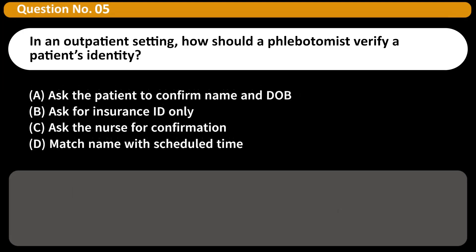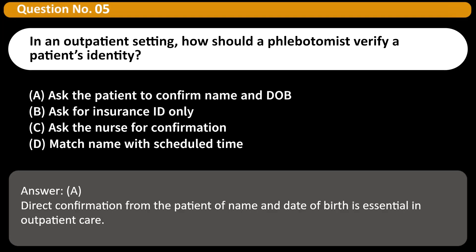In an outpatient setting, how should a phlebotomist verify a patient's identity? A. Ask the patient to confirm name and DOB. B. Ask for insurance ID only. C. Ask the nurse for confirmation. D. Match name with scheduled time. Answer: A. Direct confirmation from the patient of name and date of birth is essential in outpatient care.